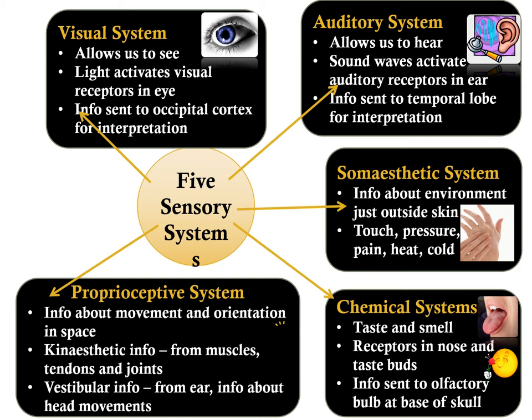The third sensory system is the proprioceptive system, which provides people with information about their movements and orientation in space. Kinesthetic information comes from muscles, tendons, and joints, whereas vestibular information comes from the ear and provides information about head movement.